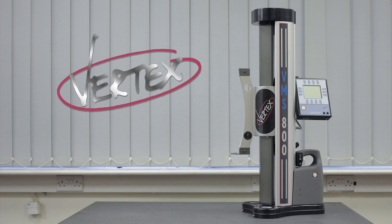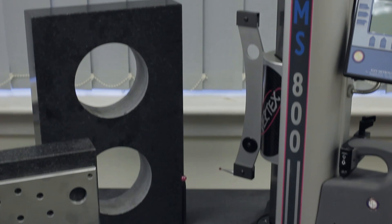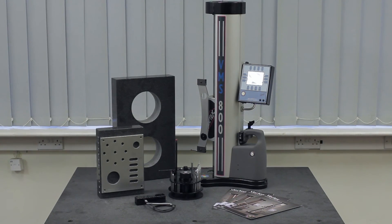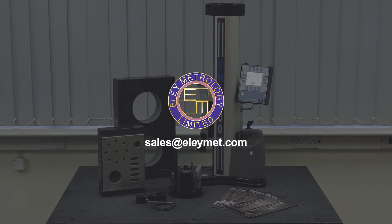The vertex is available in 800, 1000 and 1350 capacity models. It is available with a range of accessories that further enhance its inspection capability. For more information, please contact sales at elymet.com